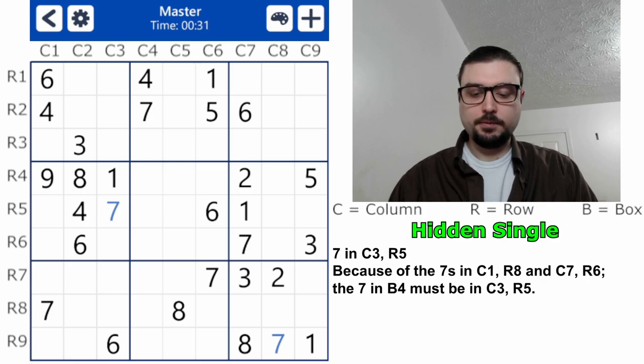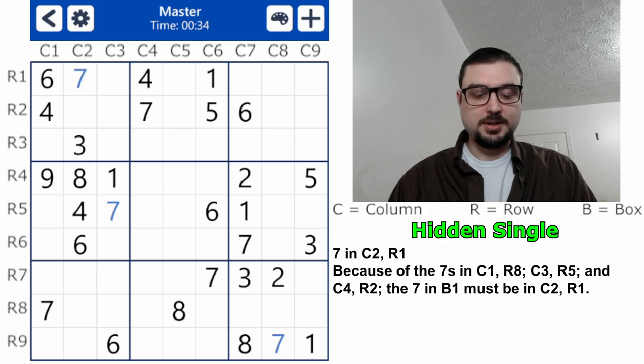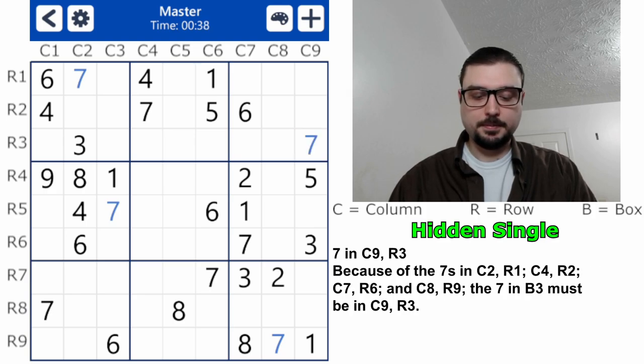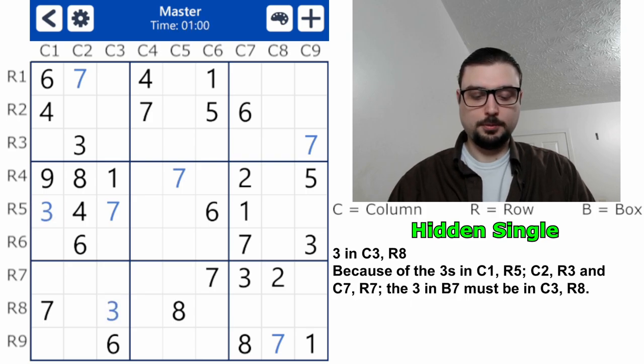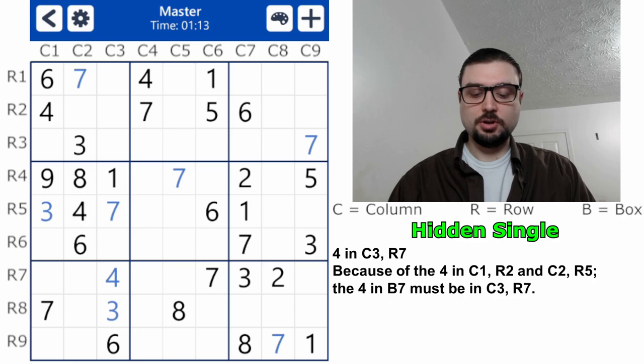Right now I'm looking for hidden singles. I'm on the sevens, so I'm going to see if I can finish all the sevens, and it looks like I can. I feel like general strategy is better than listing every single coordinate, but if you are interested in that it will be below.